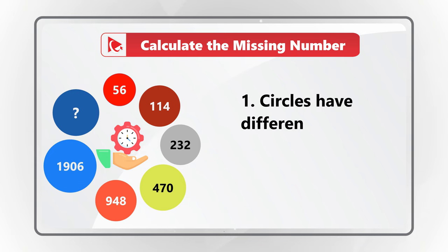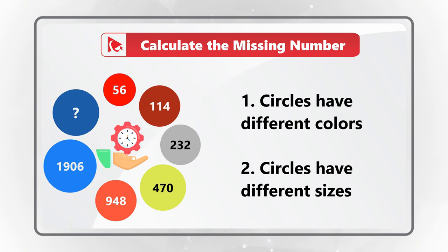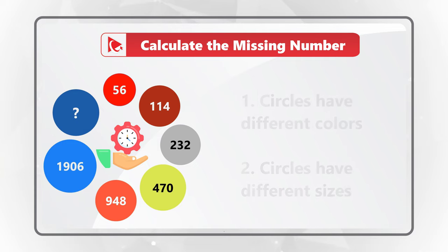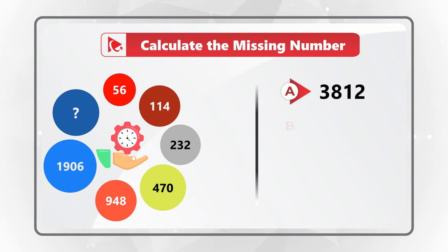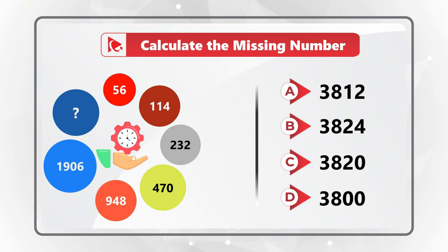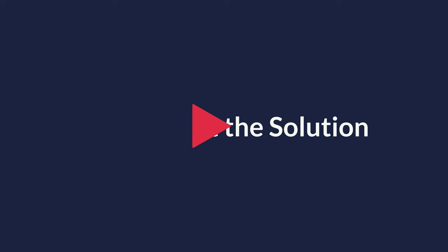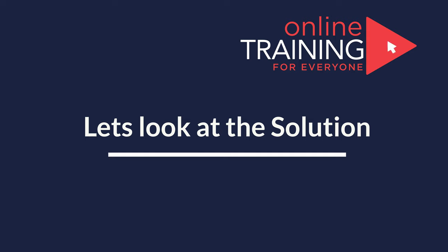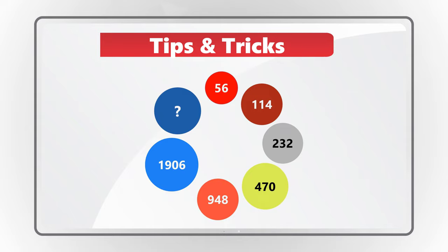The circles have different colors and sizes — introduced just to confuse you. The choices are: A — 3812, B — 3824, C — 3820, and D — 3800. The pattern is the key to solving this challenge.